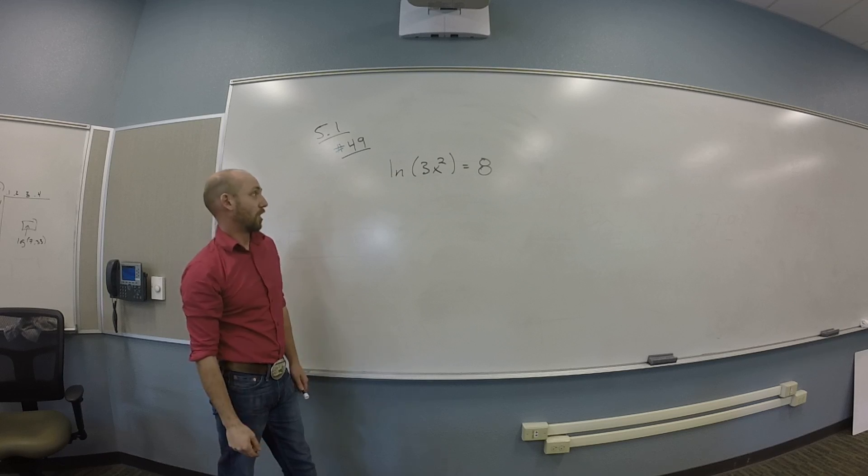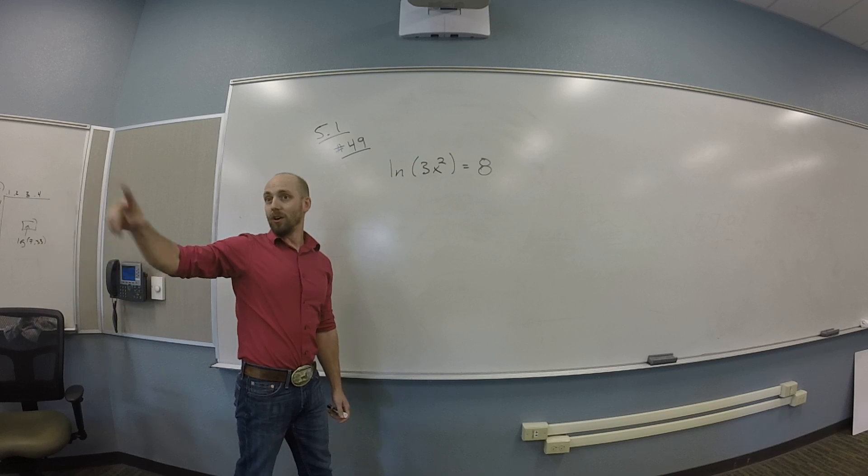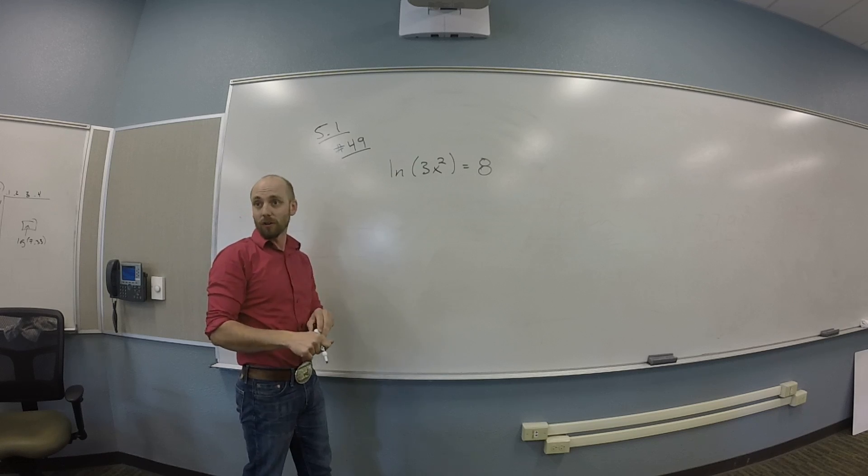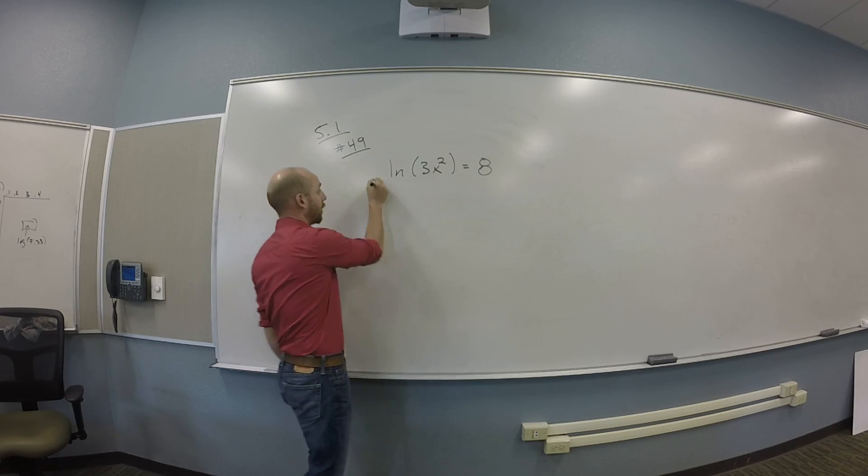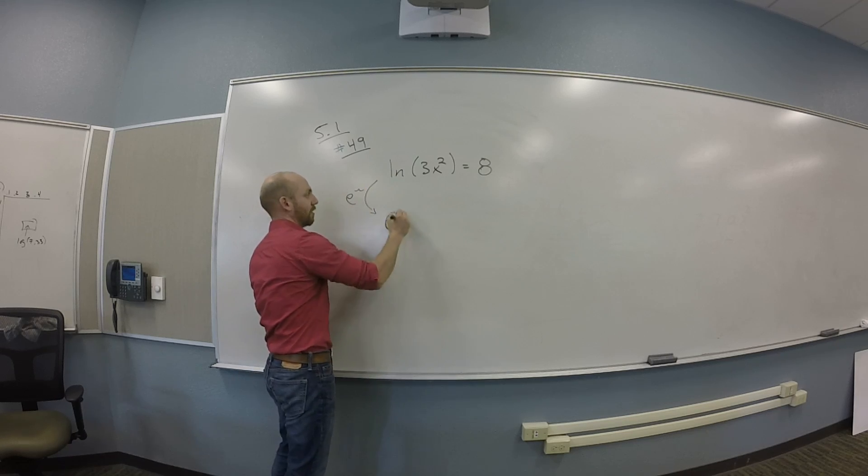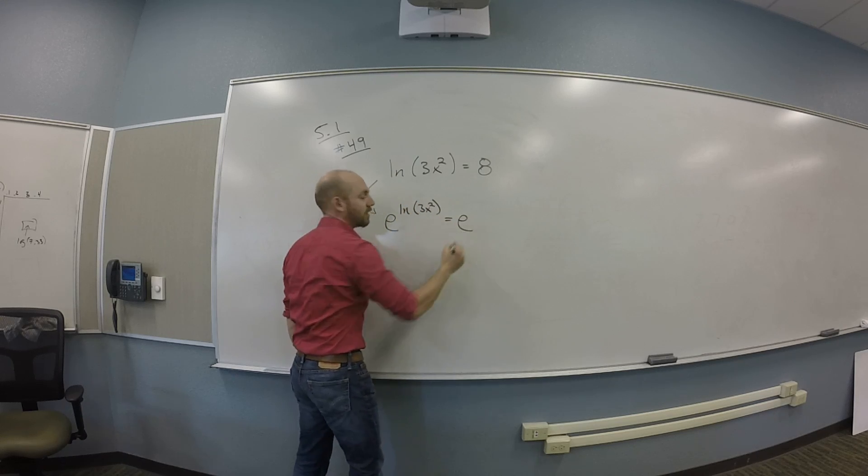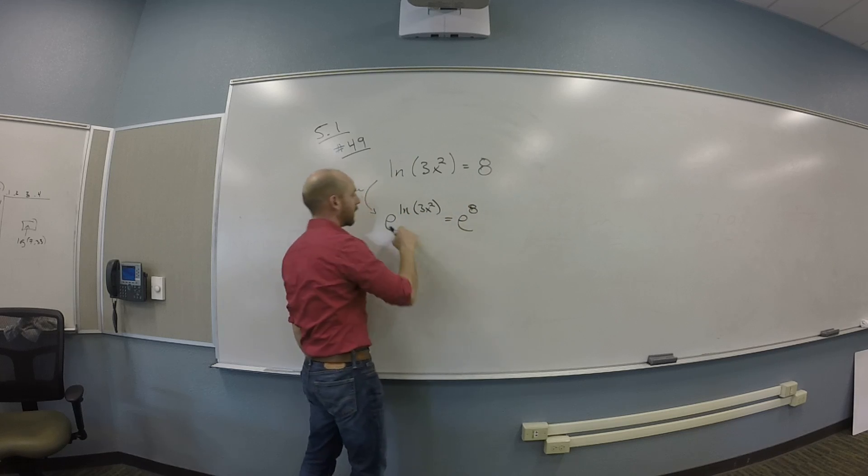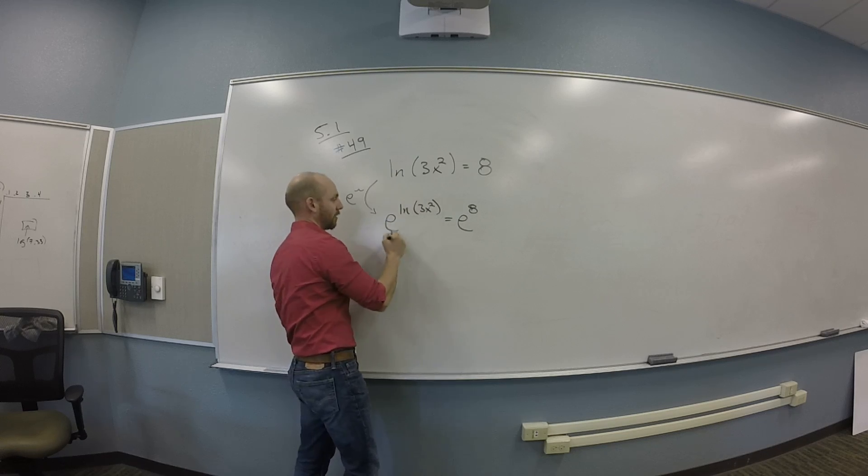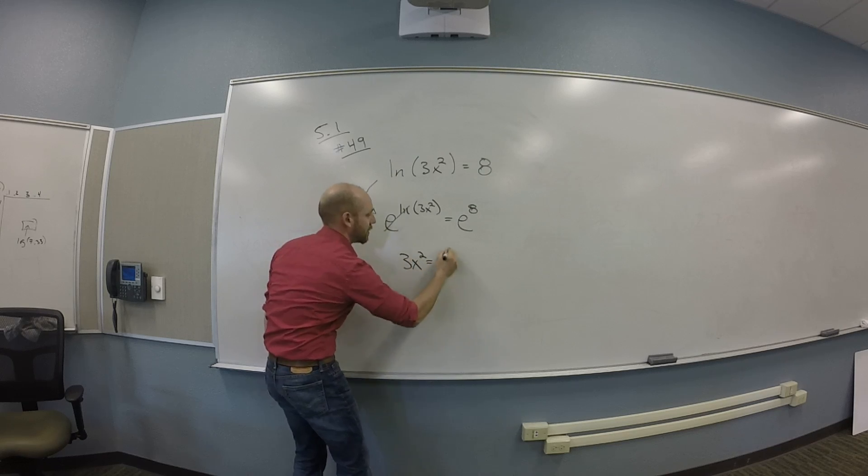So thoughts, things, what do you know? Okay, so you could get rid of the natural log by applying the inverse function to natural log, right, which is going to be what? So you're going to put e to the stuff on both sides. So this will do e to the log of 3x squared is e to the 8th. And then e and log are inverse functions, yeah? So those undo one another. So I really get 3x squared is e to the 8th.